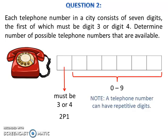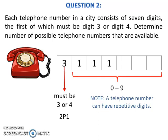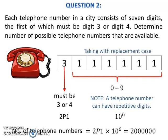Note that a telephone number can have repetitive digits — for example, 3,0,0,0,0,0,0 or 3,1,1,1,1,1,1, and so on. Thus, this is a taking-with-replacement case, so the number of ways to arrange the remaining digits is 10 to the power of 6. The total number of telephone numbers available is 2P1 times 10 to the power of 6.